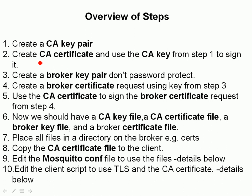Here's an overview of the steps we're going to cover. First, we create a CA key pair — we're going to be the certificate authority. Second, we create a CA certificate and sign it with the CA key from step one. Third, we create a broker key pair (public and private) — we're not going to password-protect it, as doing so can cause trouble when the server tries to read it. Fourth, we create a broker certificate request using the key from step three. Fifth, we use the CA to sign the broker certificate request. After that we'll have a CA key file, CA certificate file, broker key file, and broker certificate file.